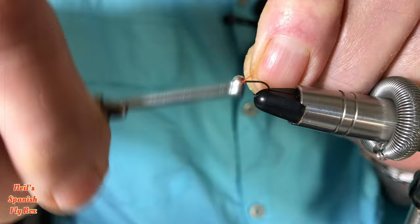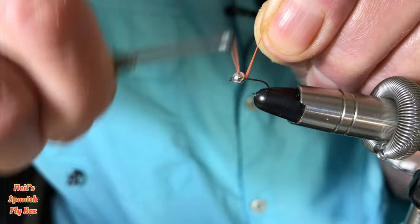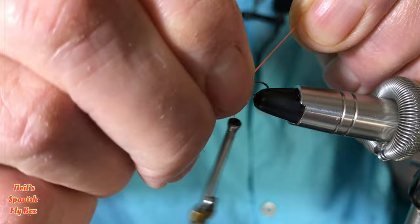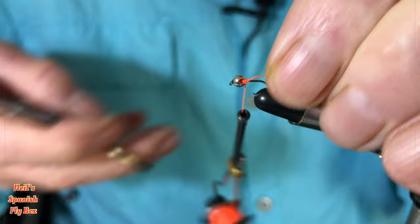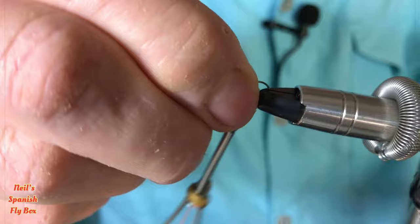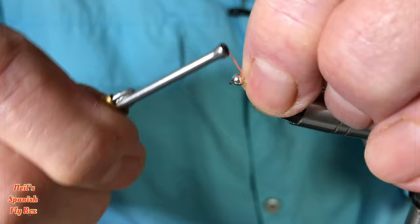It's a great attractor when used on the top as a top fly, but it can also catch fish in its own right. Rainbow trout in particular are keen on the color, I think. They're very keen on orange.